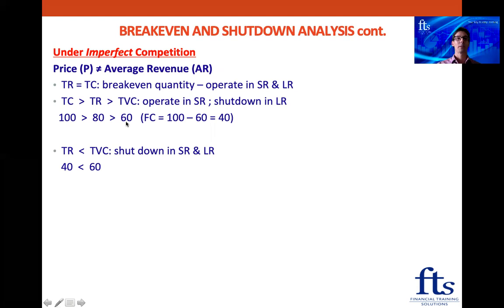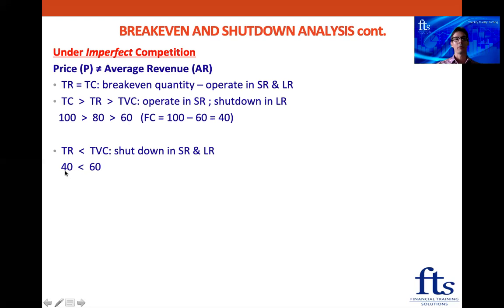Our total costs are the sum of fixed costs and variable costs. If total costs are greater than total revenue but total revenue is at least greater than total variable costs, then we operate in the short run but shut down in the long run. But when total revenue is less than total variable costs — for example, total costs are 100, variable costs are 60, fixed costs are 40, and revenue is only 40 — we should shut down in both the short run and long run.